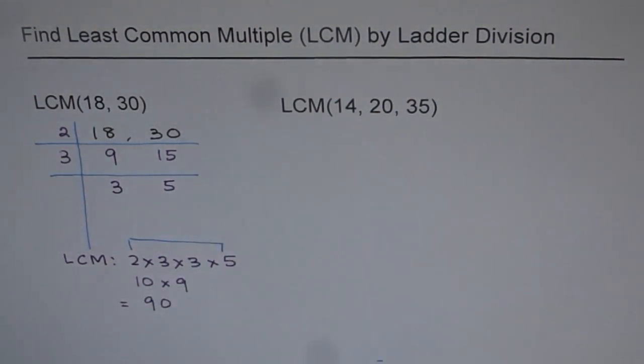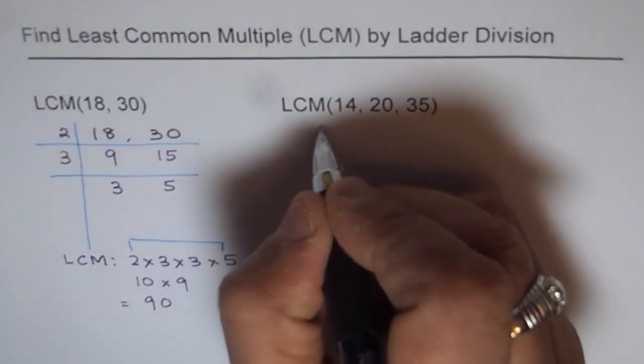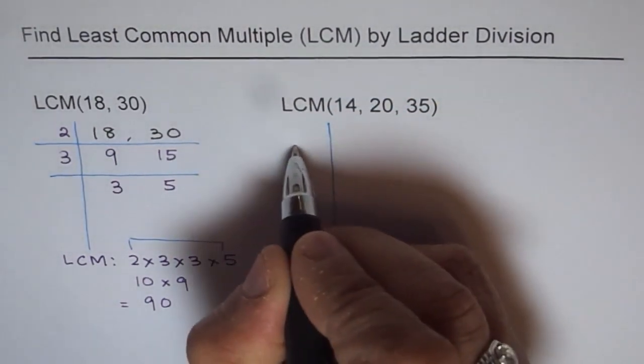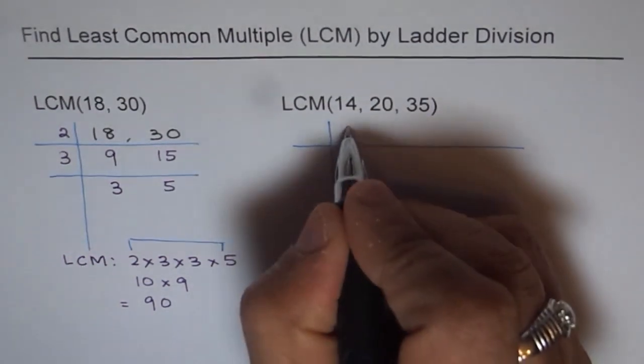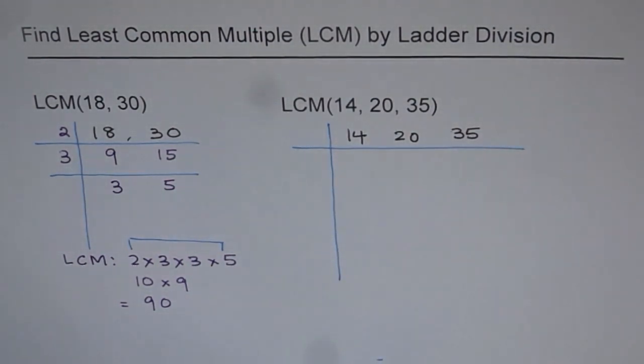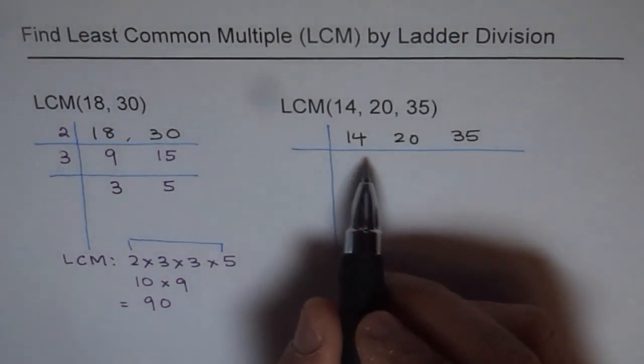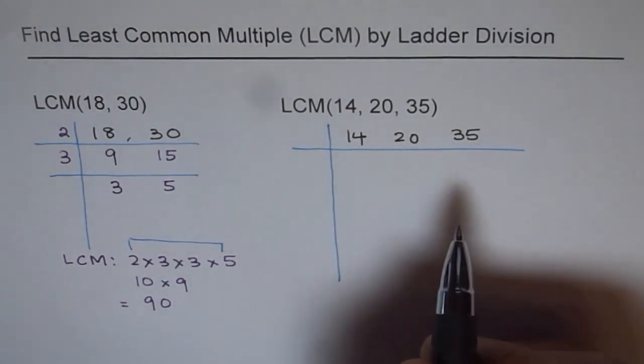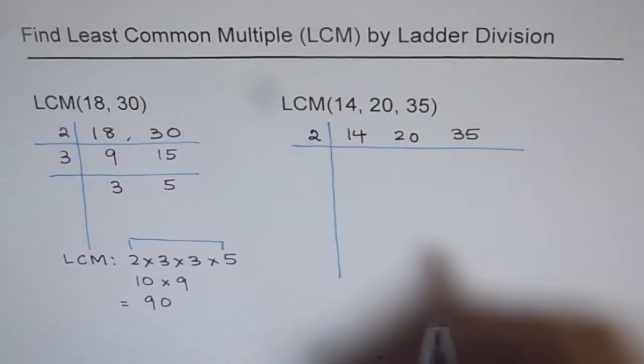Let's see how to apply this method with 3 numbers. Let's try to figure out what is the LCM of 14, 20 and 35. We will again make a division column here and list our numbers: 14, 20 and 35. Try to find prime numbers which can divide into at least 2 of them to start with or all 3 of them. We really don't have any number which could divide into all 3 of them, so let's start with 2 of them.